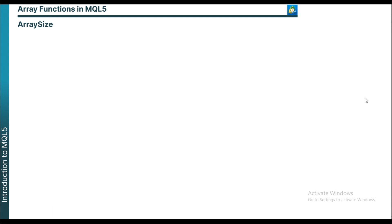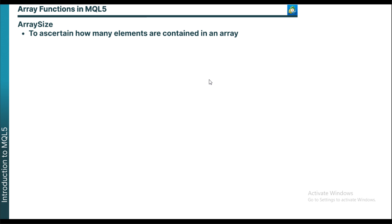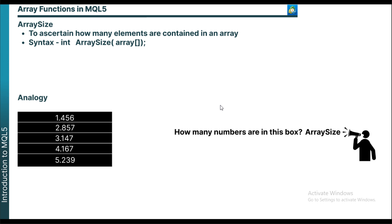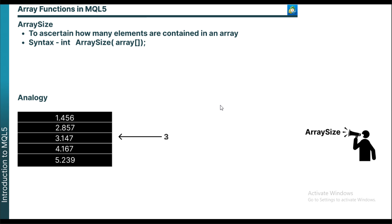The next function we will be discussing is ArraySize. What ArraySize does is that it is used to ascertain how many elements are contained in an array — it confirms the size of an array. The return value is always an integer value, because size can only be an integer. The parameter is the name of the array, which is the identifier. Using analogy, imagine you have a box which stands for our array. ArraySize is like magical words you can use, and the function will count the number of elements you have — in this case, 5 elements.